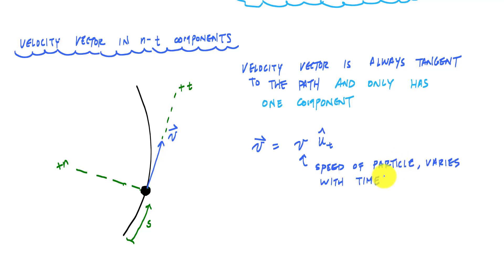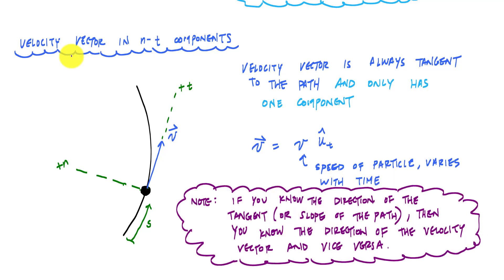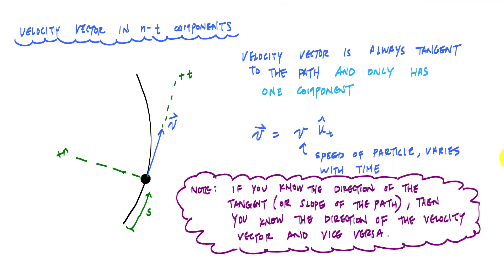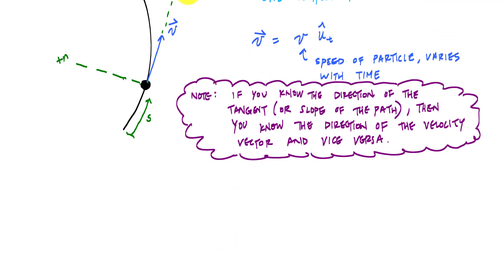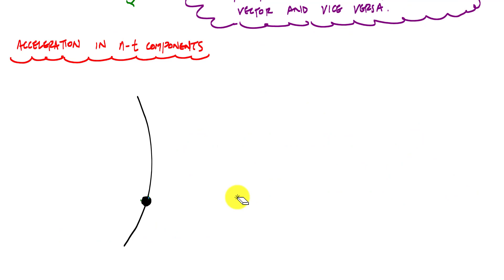One thing to note: if you know the direction of the tangent or the slope of the path, then you have the direction of the velocity vector, and vice versa. Now let's look at the acceleration vector in NT components, using the same drawing. The acceleration vector can point in any direction.